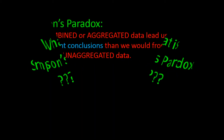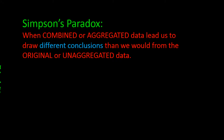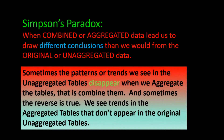This paradox doesn't happen often, but when it does, it leads us to conclusions that are contradictory to the conclusions we would make by looking at the original un-aggregated data. Sometimes when we aggregate data, we see relationships or trends that we didn't see in the original data. The reverse is true as well — sometimes we see relationships in the un-aggregated data that we don't see with the aggregated information.